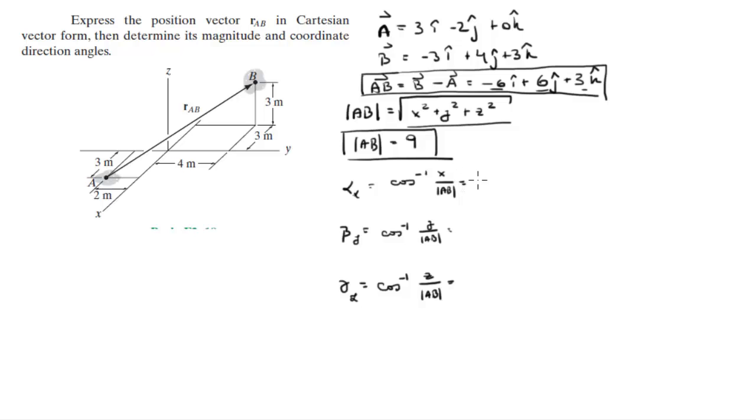And these values come out to be 131.8 degrees, 48.18 degrees, and 70.5 degrees. These are the direction angles. Final answer: when you're going to plug in the X or any value, in this case when you're going to plug in the X, don't forget to include the negative sign. That's why it's 131.